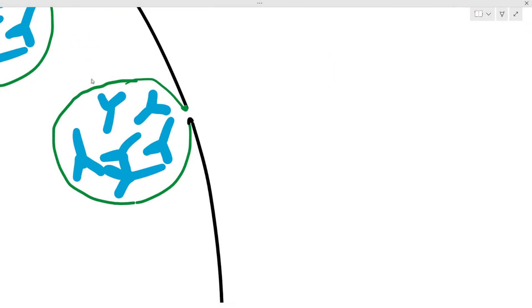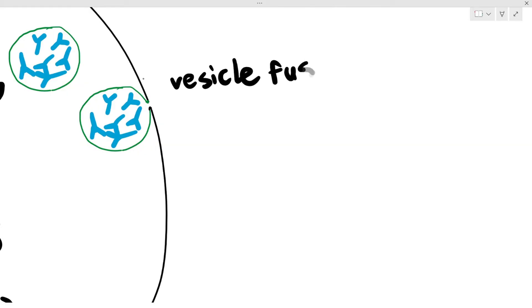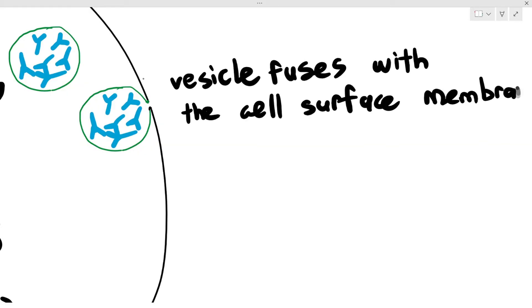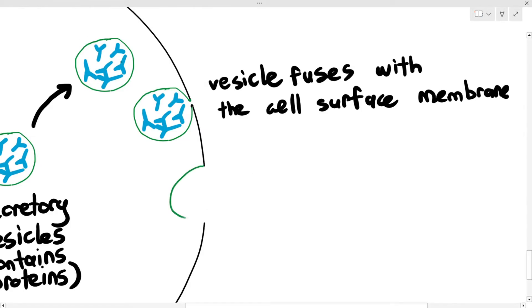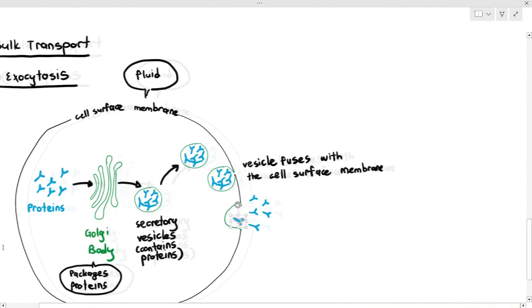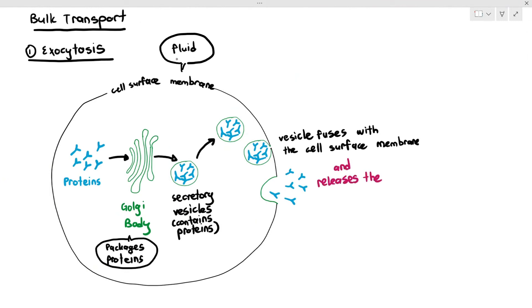The vesicle membrane and the cell surface membrane will fuse with each other. And when they fuse with each other, look at the second diagram, the vesicle becomes a part of the cell surface membrane. And what happens to the antibodies or the large proteins inside the vesicle? They will then go out of the cell. So this is how the cell is able to release or secrete out extremely large substances that normally cannot cross through the cell membrane by itself. The vesicles will fuse with the cell surface membrane and push the substances out of the cell.